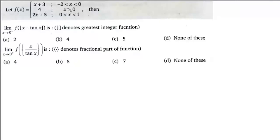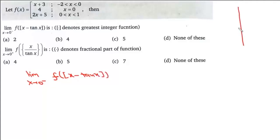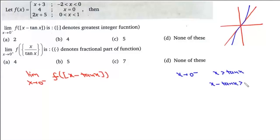Given f(x) = x+3 for x ∈ (−2,0), f(0) = 4, and f(x) = 2x+5 for x ∈ (0,1). Find limit x→0⁻ of f(GIF(x minus 10x)). When x is negative, x > 10x, so x minus 10x > 0 but lies between 0 and 1. Therefore GIF(x minus 10x) = 0, and f(0) = 4. The answer is option B.